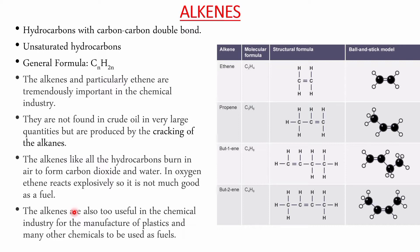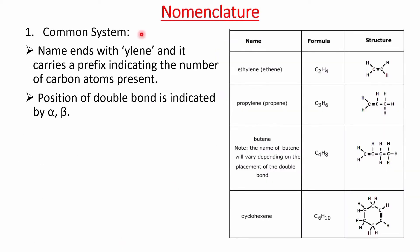Alkenes burn in air to produce carbon dioxide and water, releasing a lot of energy. However, we don't prefer alkenes as a fuel because when they burn in the presence of air, they are slightly explosive. That's why we cannot use them as fuel in motor vehicles, industries, or for domestic purposes. Alkenes are also useful in chemical industries for manufacturing plastics and other chemicals used to make fuels.